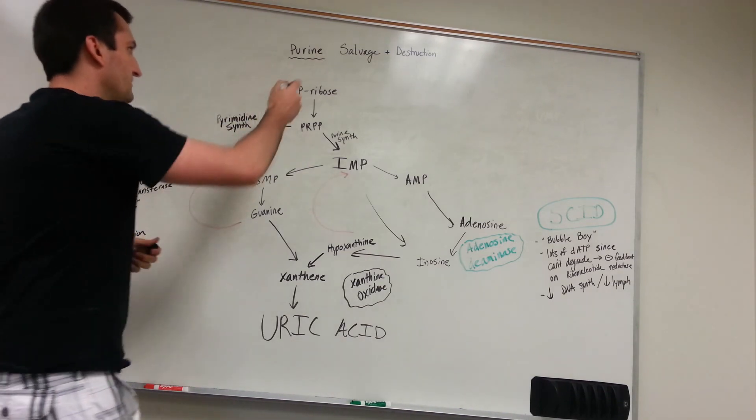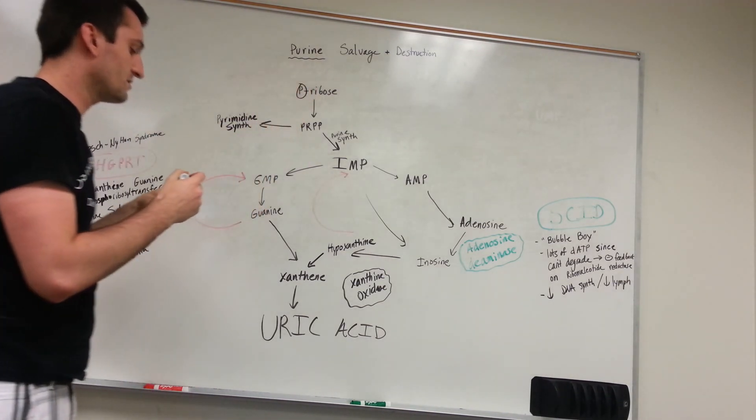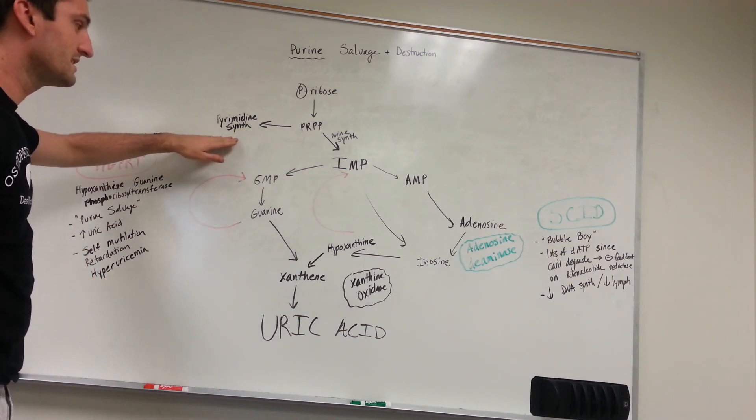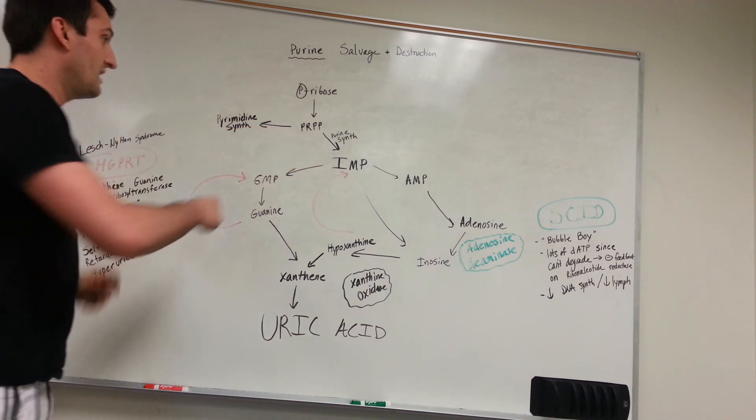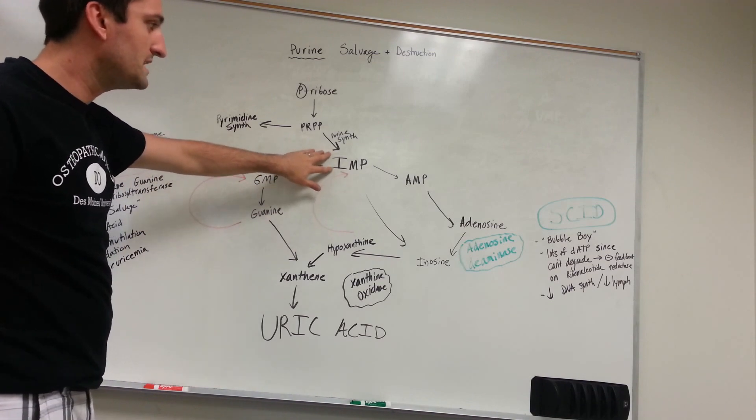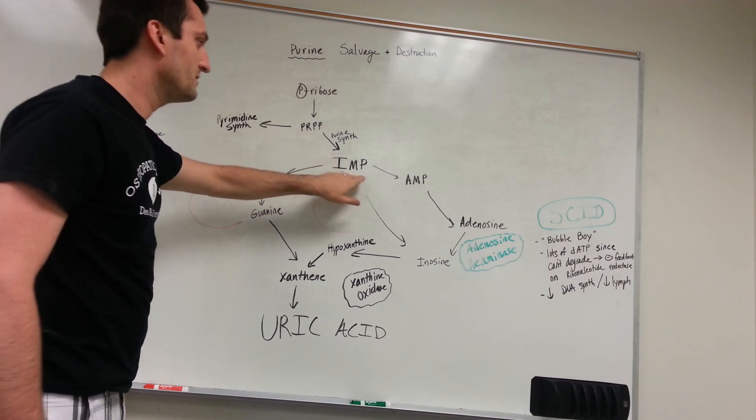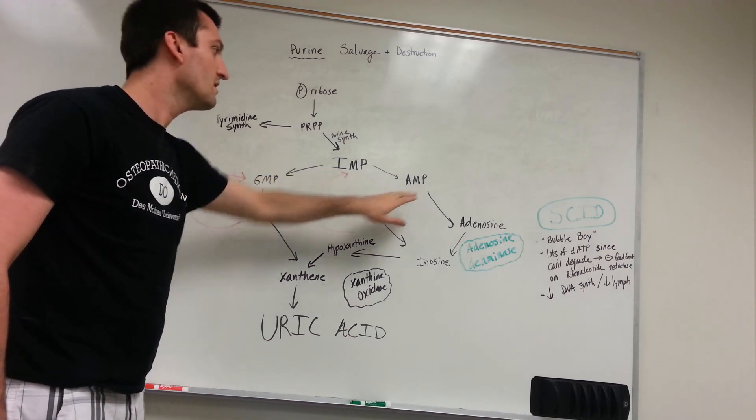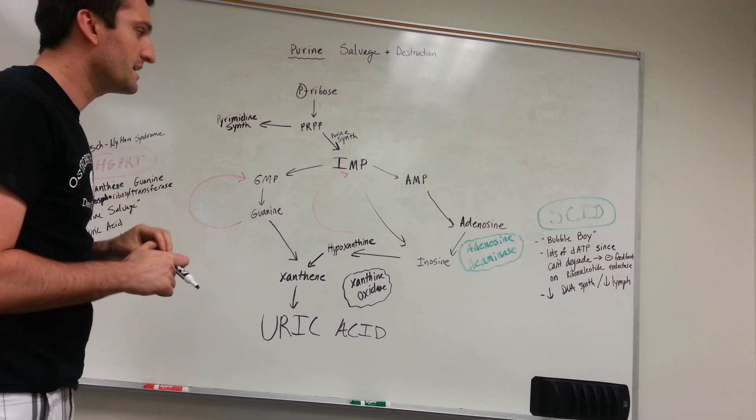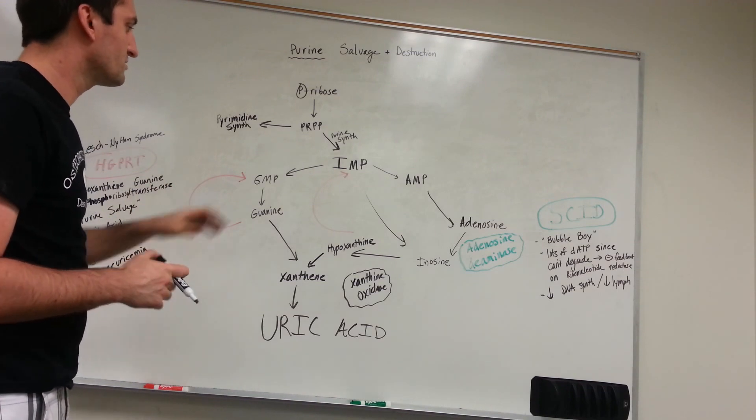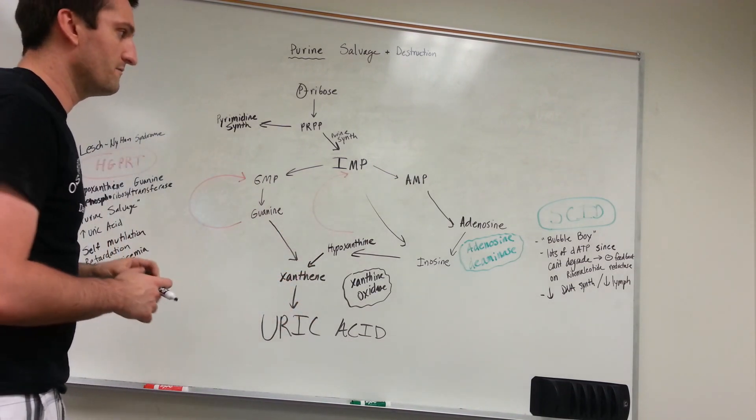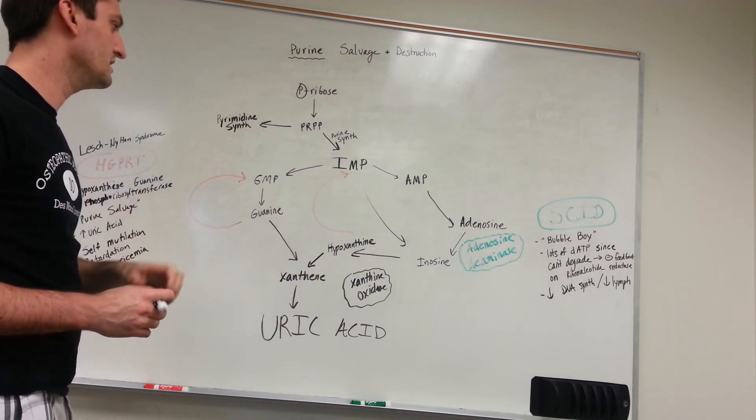If you've watched my purine synthesis video, you would know that phosphate ribose is going to be turned into PRPP. That PRPP can decide it either wants to be pyrimidine synthesis or purine synthesis. If it decides to go into the purine synthesis pathway, it'll eventually get turned into IMP, and that IMP is an intermediate and it'll get turned into GMP and AMP, which are going to be your usable forms. Also note that nucleotide breakdown can also create more GMP and AMP because if you have a lot of meats, you'll have a lot of bases.